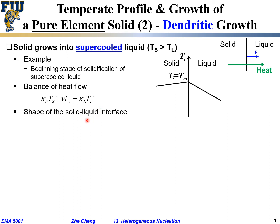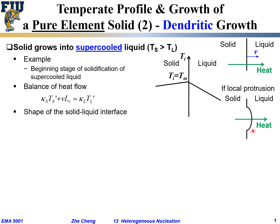Now let's consider the shape of the solid-liquid interface. Again, let's consider a moment when we have a solid protrusion — a bump into the liquid. The heat flow is still from the high temperature on the left in the solid into the low temperature on the right in the liquid.